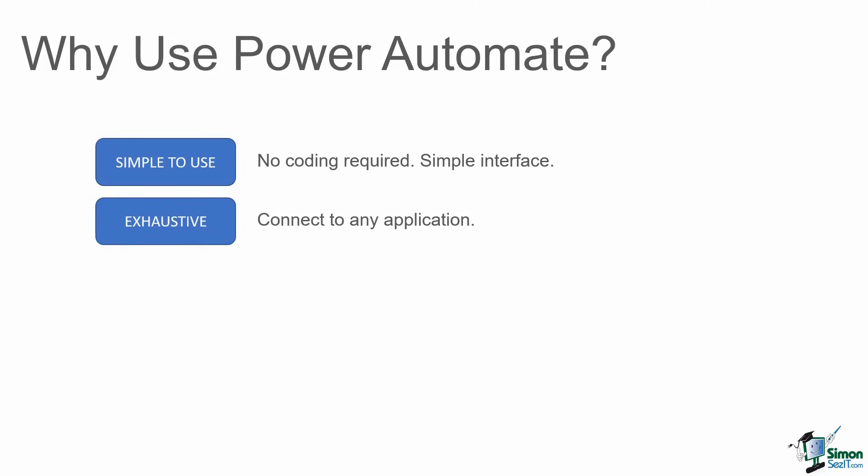It's also an exhaustive application. Power Automate allows you to connect to any application in order to build these workflows. There are hundreds of different connectors within Power Automate, so maybe you want to automate a task between Outlook and OneDrive, or maybe between Gmail and Outlook. You can even automate tasks for external systems like Salesforce. And if you can't find the connector within Power Automate, you can use third-party tools.